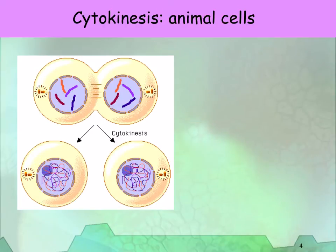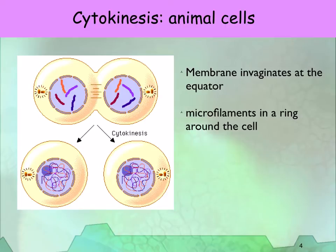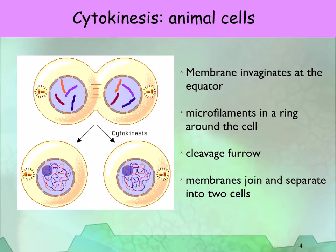Looking at cytokinesis in animal cells, the membrane invaginates at the equator. This is caused by microfilaments in a ring around the cell, and this forms a cleavage furrow. Eventually, the membranes join and separate into two separate cells.